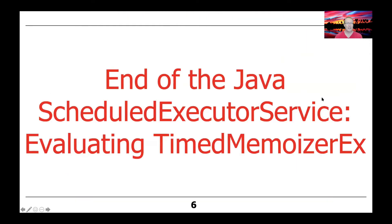One thing to point out: the Timed Memoizer implementation, which had a runnable associated with every key-value pair, still only had one thread of control allocated for the scheduled executor service. Therefore, we didn't really get a benefit from concurrency — everything was still serialized when those timeouts were processed.